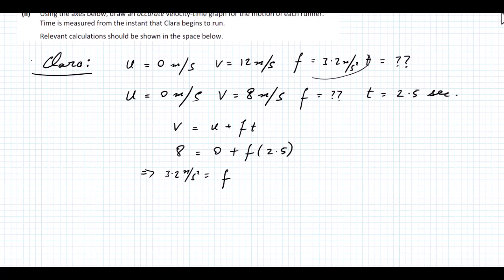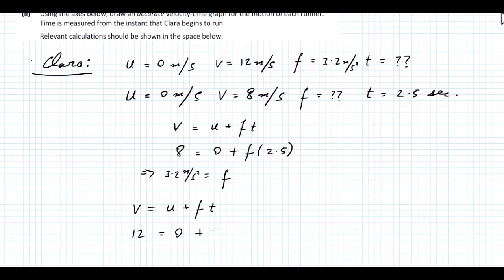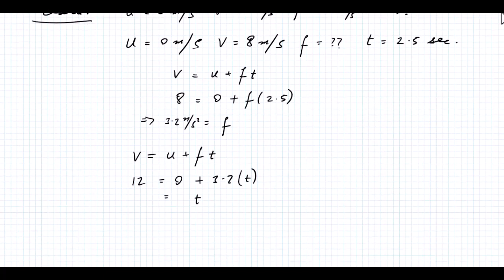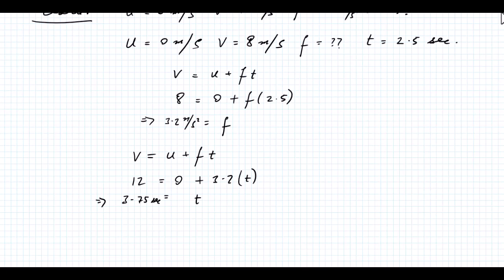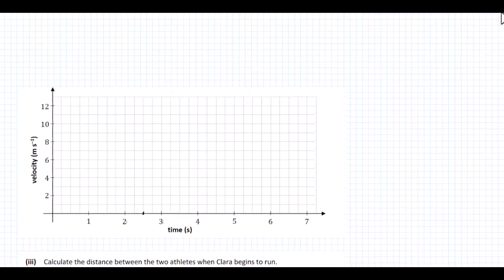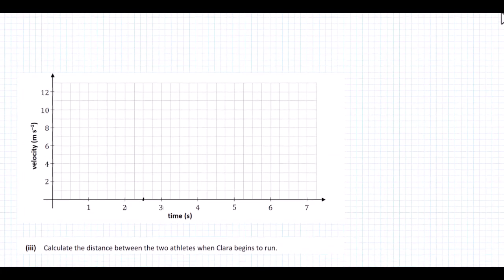Now using F equals 3.2 m/s² and the fact that Clara accelerates from 0 to 12 m/s, we can work out the total time. Using V equals U plus FT: 12 equals 0 plus 3.2 times T, giving a time of 3.75 seconds for Clara to reach 12 m/s.